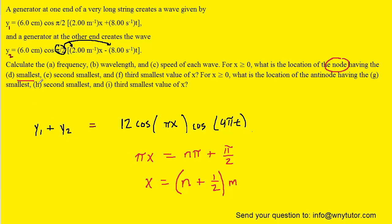Now, we're looking for the smallest value at which there is a node. So that would occur when n is equal to 0. That's the smallest value that we could let n equal. And so when we plug 0 in there, we can see that x would turn out to be half of a meter. So this would be the correct answer to part D of the question.